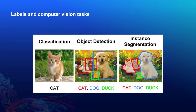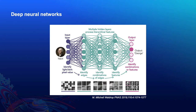Once we have a trained model, the process of using that model to make predictions on new data without human input is usually referred to as inference, and is also usually less computationally intensive than the training process itself. Broadly, we use the term computer vision to refer to automated extraction of more useful data from images. Most computer vision applications rely on machine learning, and the most effective type of machine learning models for computer vision are deep neural networks — hence the term deep learning.